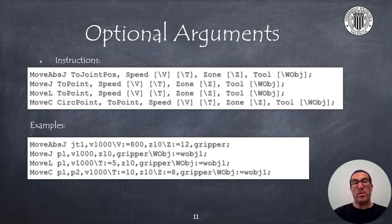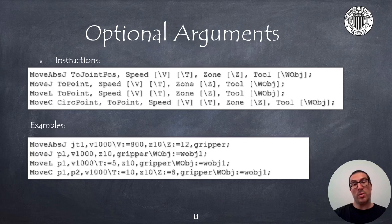Move instructions have a number of optional arguments. Here, I show you some of the syntax of move instructions that we have previously seen. Specifically, I have included the arguments that I consider to be the most relevant ones. TCP speed can be adjusted with the V speed argument or time of the movement in seconds with the T argument. The zone data can be defined with the Z parameter.